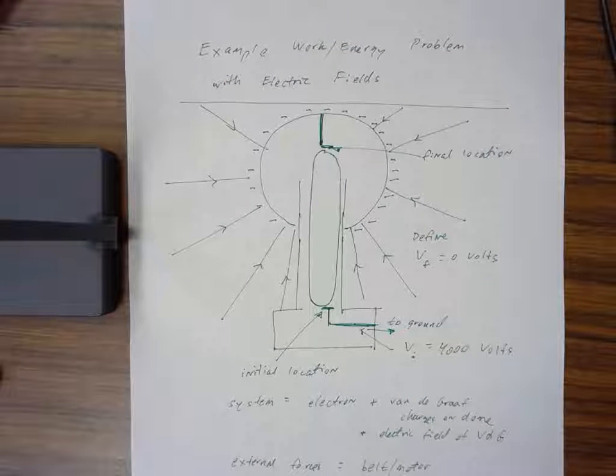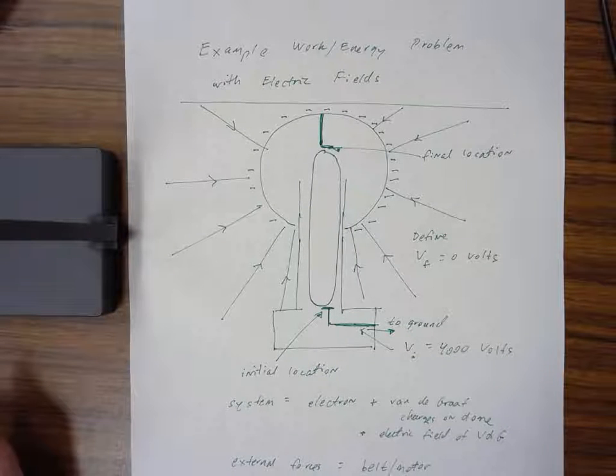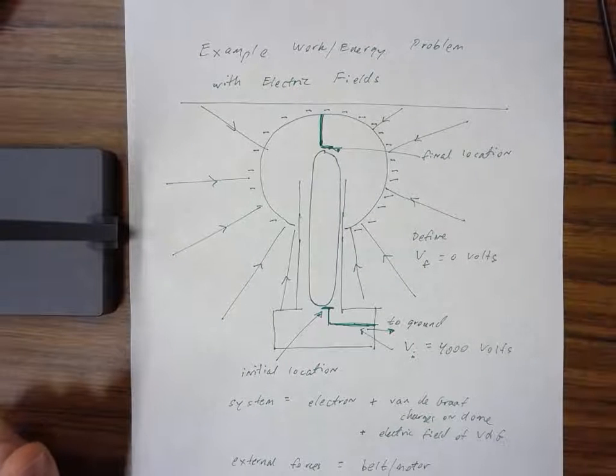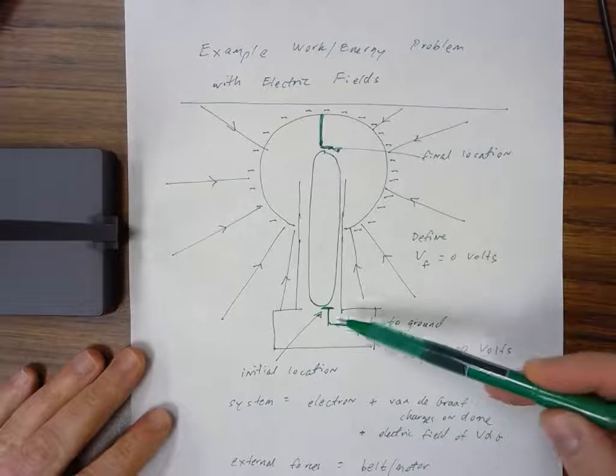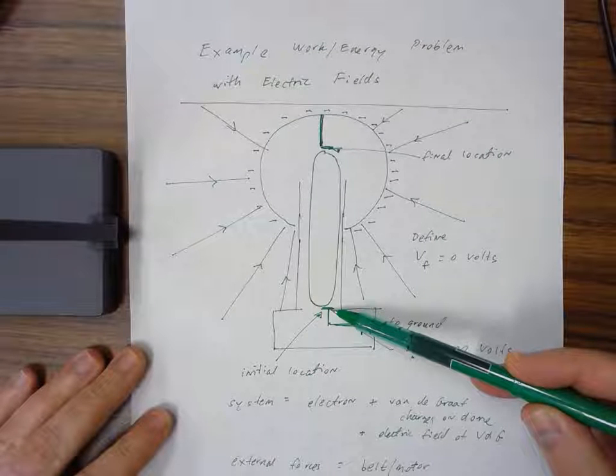I've drawn a picture representing a Van de Graaff generator that has been negatively charged. You can see inside the Van de Graaff the belt that carries the charge from this terminal down at the bottom inside the base.